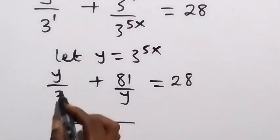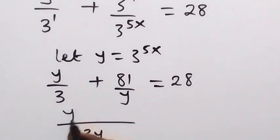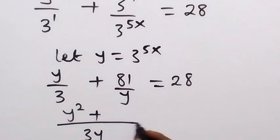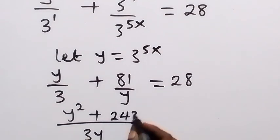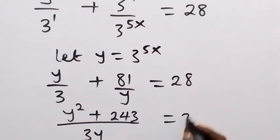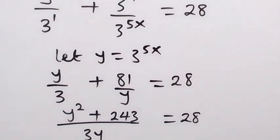The LCM here is 3y. So 3y goes into y giving y, and 3y goes into 81 over y giving 3 times 81, which is 243. So we have y squared plus 243 over 3y, and this equals 28.